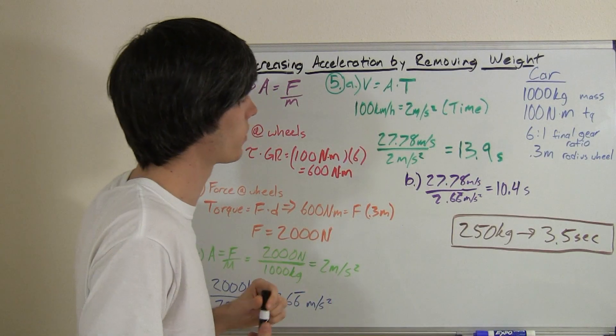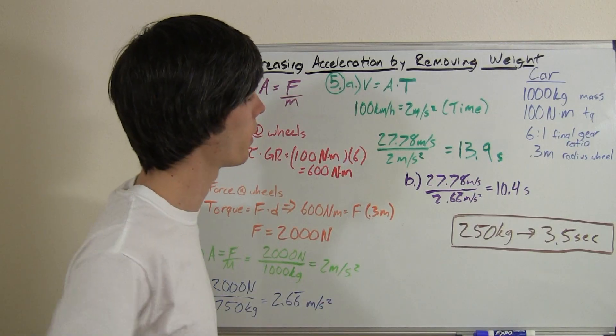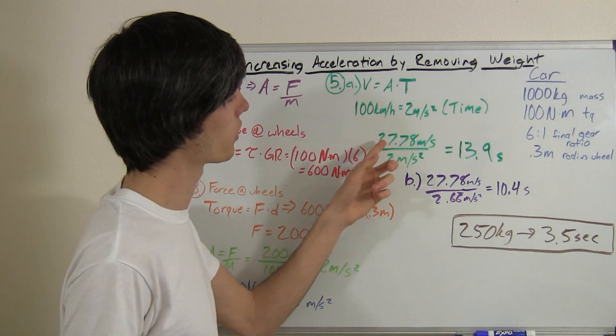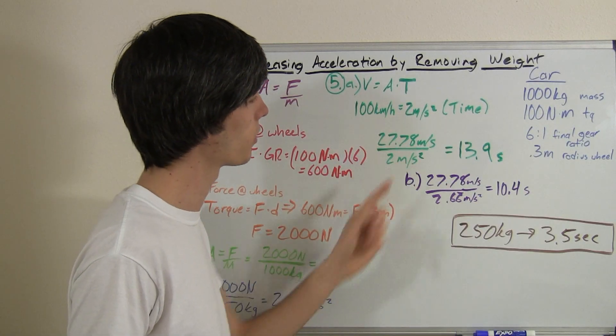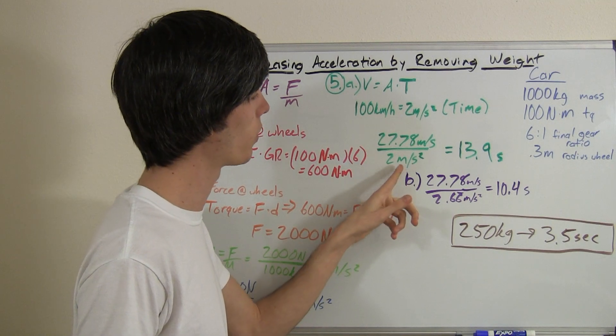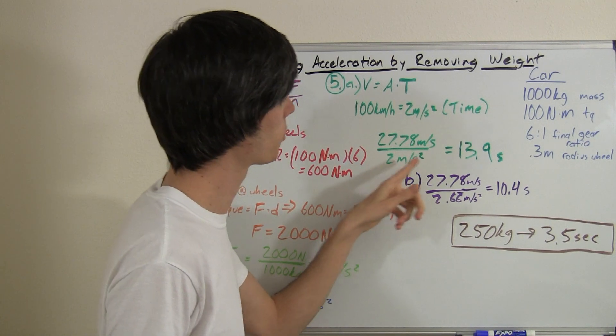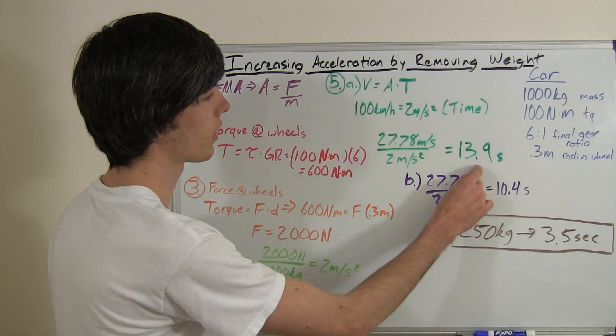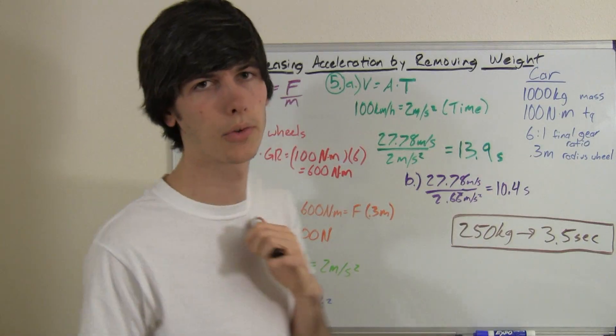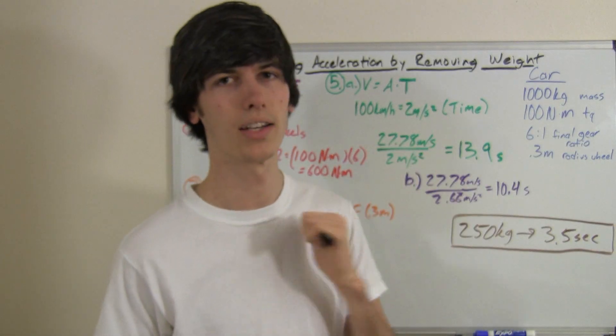And luckily with the metric system, that's very easy. Multiply by 1,000 divided by 3,600. You get 27.78 meters per second divided by 2 meters per second squared. And that gives you an acceleration of 0 to 100 kilometers per hour in 13.9 seconds.